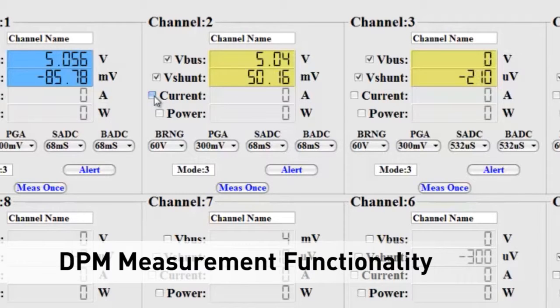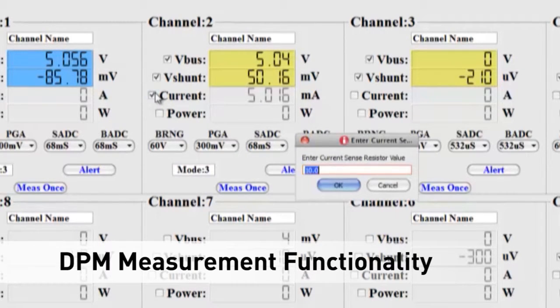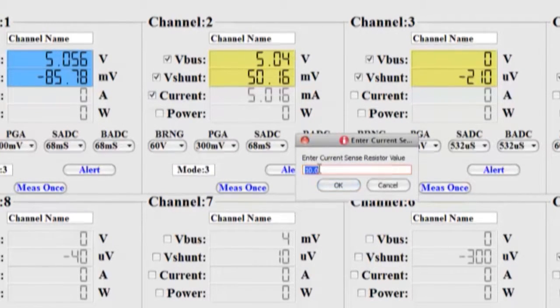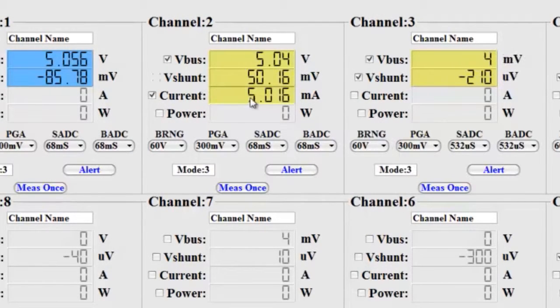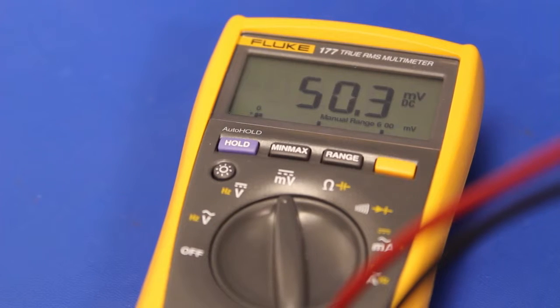Now, to measure the current, just press the current checkbox. Enter in the resistor value of your shunt and press OK. The current reading I see matches what I see on the DMM that I have here.